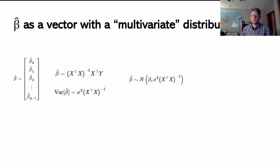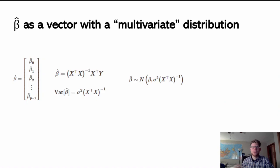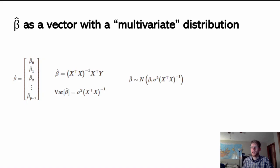Therefore, we can say that beta hat follows a multivariate normal distribution. The vector beta hat follows a multivariate normal distribution centered at the vector of true betas, with this expression for the variance. We say multivariate because beta hat is not just a single value — it's a vector of values — so we're expressing the distribution of all the beta hats in one neat expression.